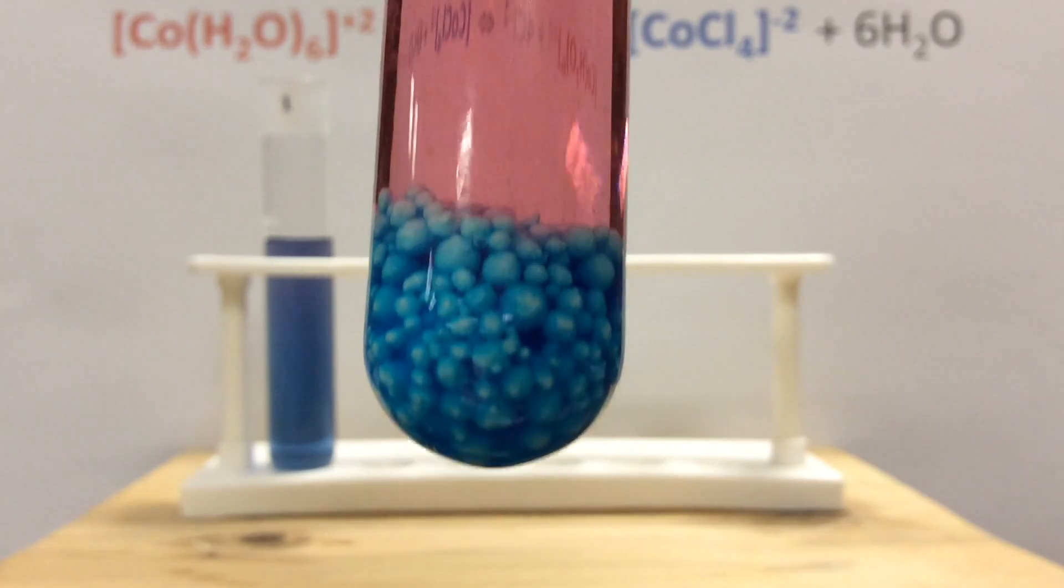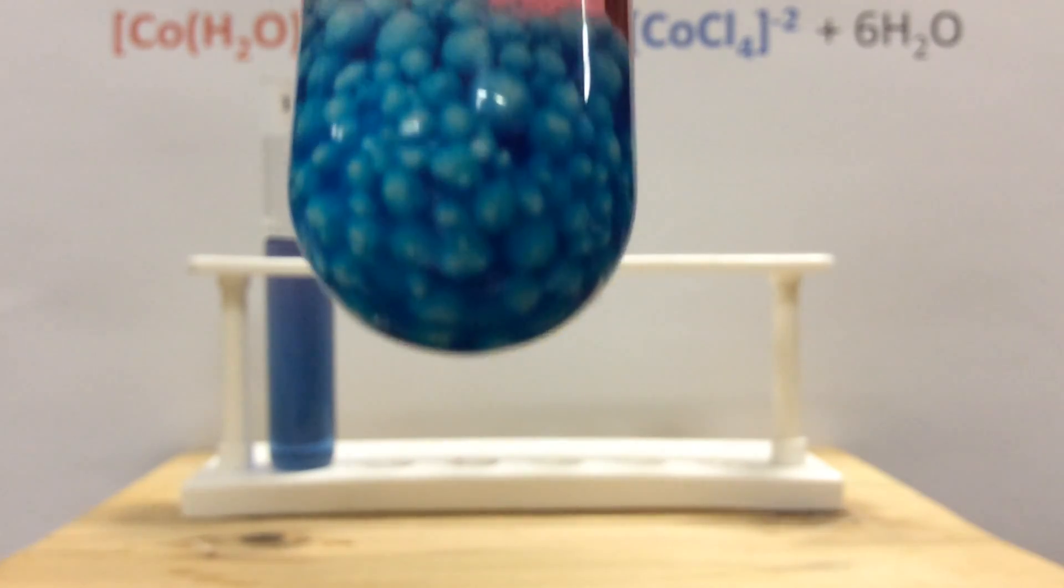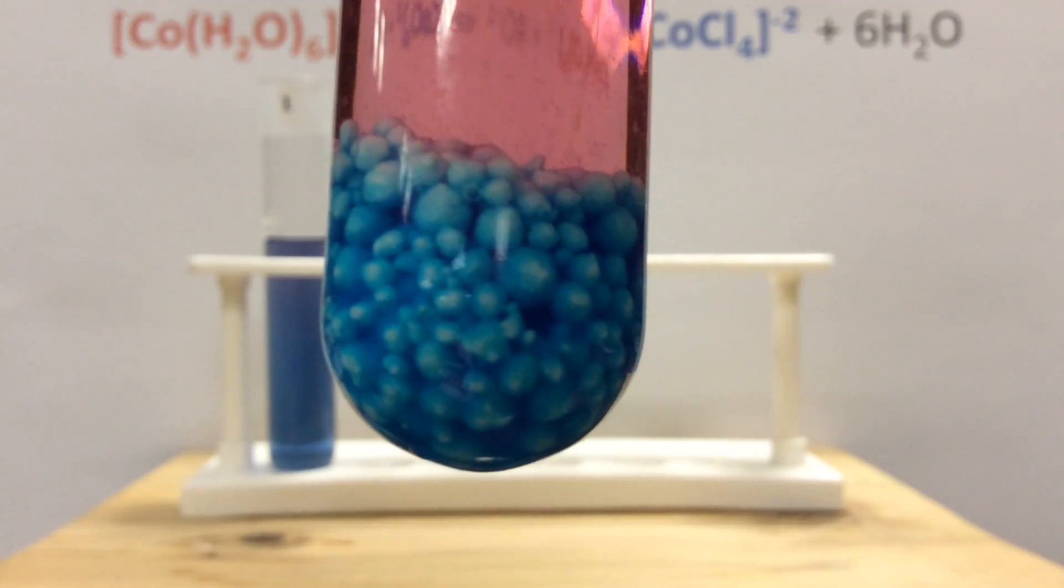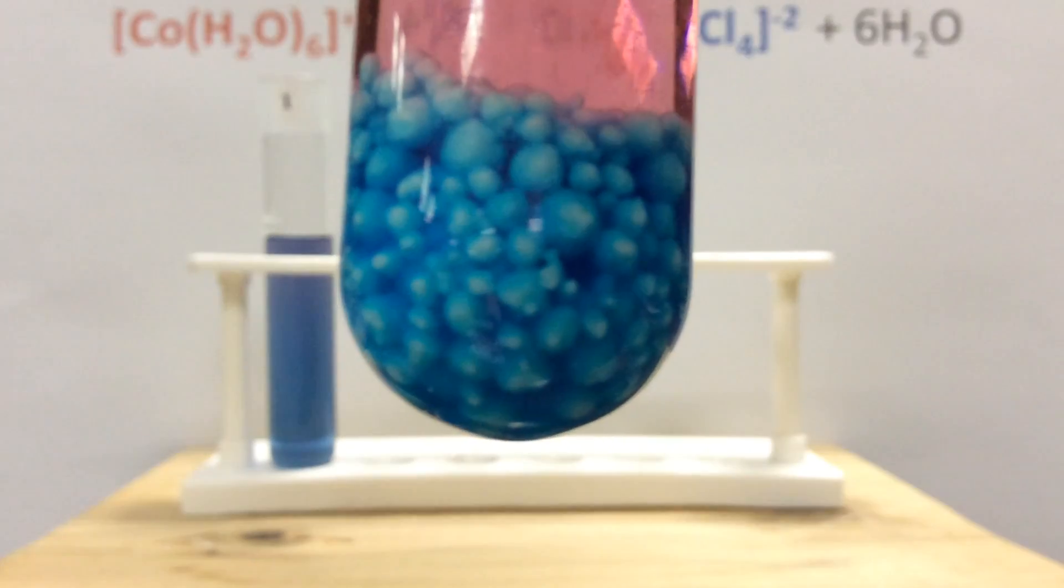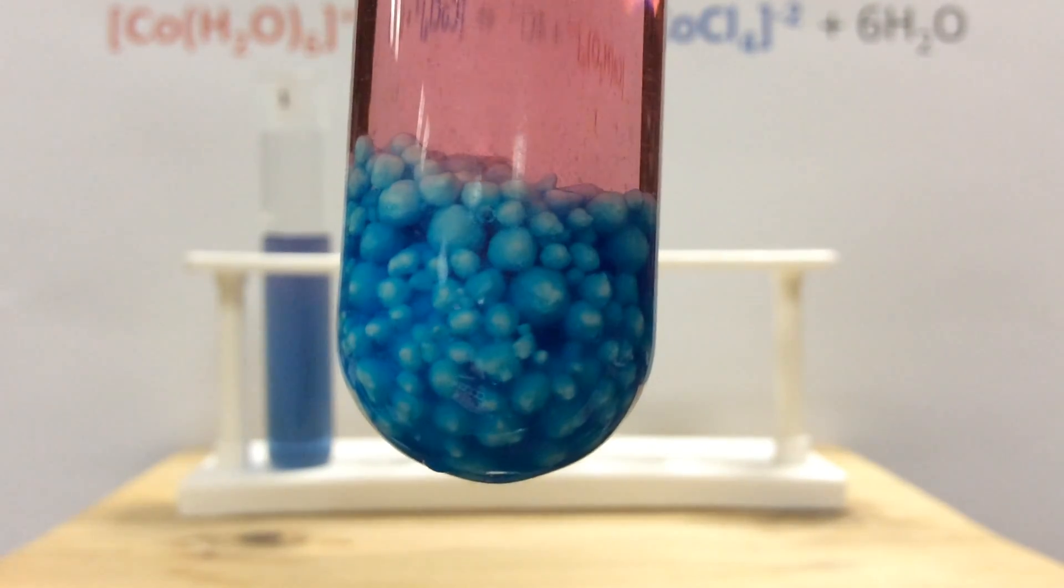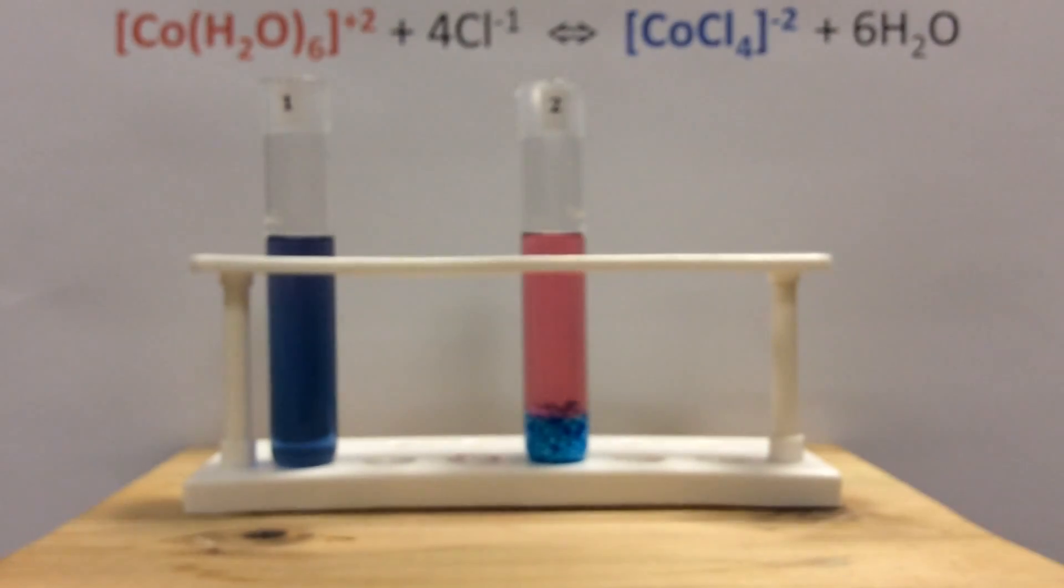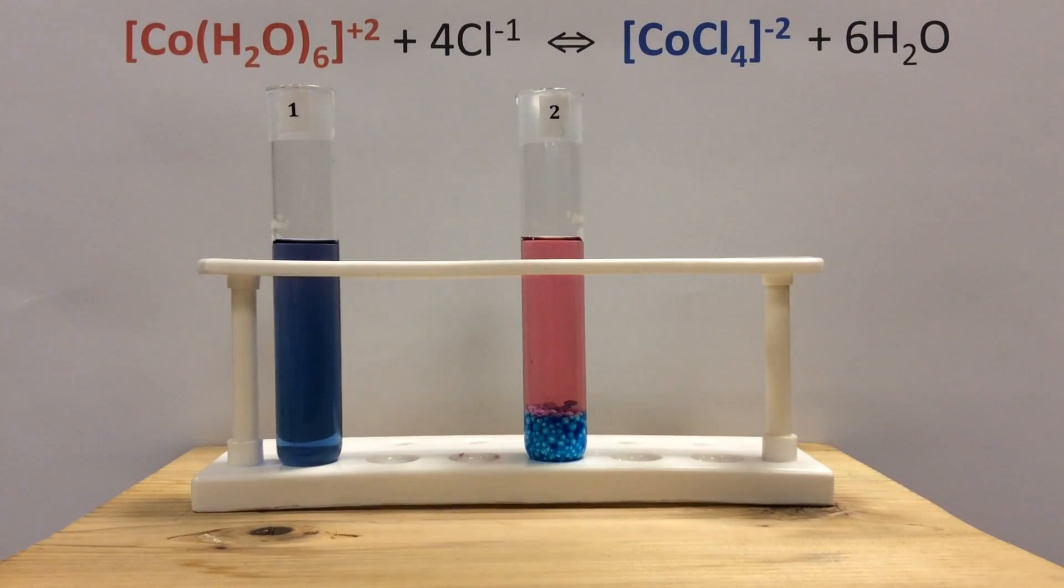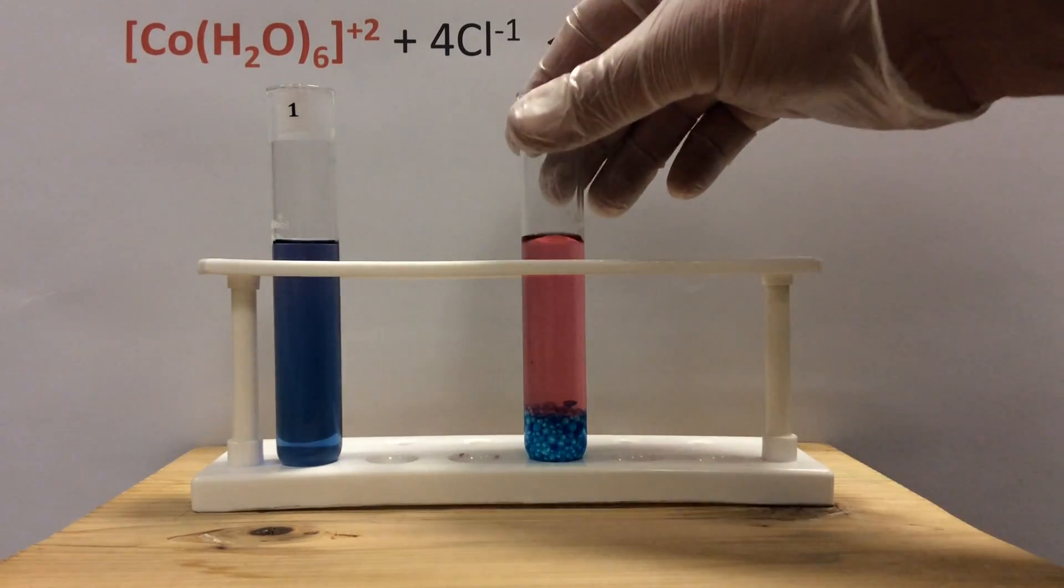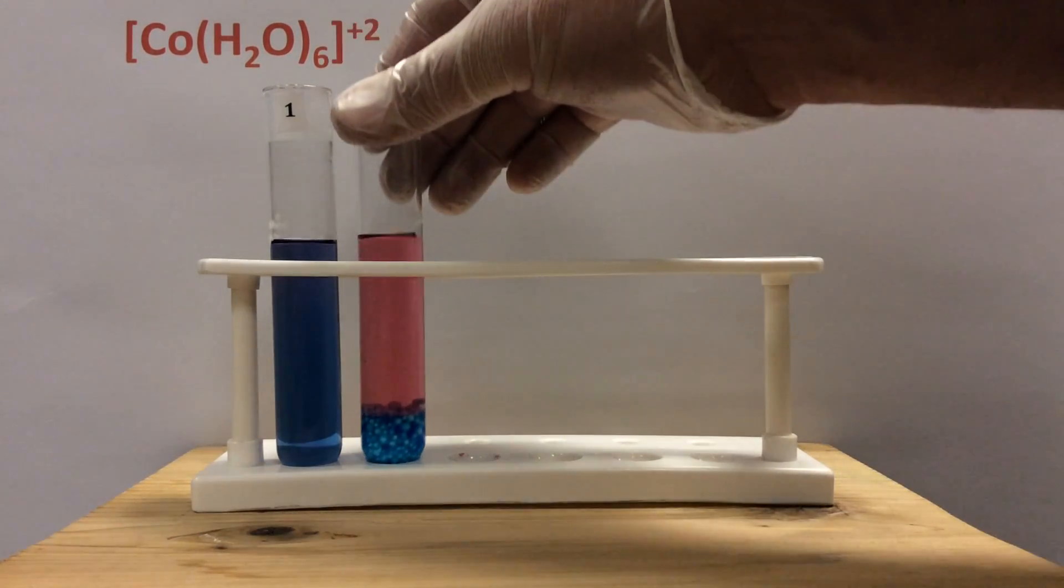We are making a lot more of that cobalt ion complex with the chloride ion, so clearly you are now shifting one way. Now of course there's not enough chloride ions in the whole test tube, but right where the salt is you can clearly see there is some shift that favors the formation of the blue complex. You should be able to know which side we're shifting and which reactants and products are going up or going down.